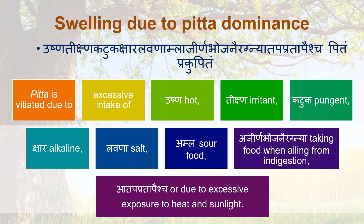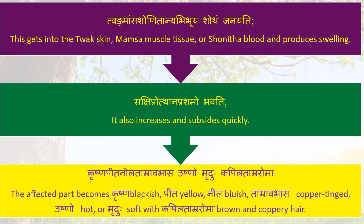Swelling due to Pitta dominance: Pitta is vitiated due to excessive intake of Ushna (hot), Tikshna (pungent), Katuka (pungent tasting), Kshara (alkaline), Lavana (salt), Amla (sour) foods, taking food while suffering from indigestion (Ajirna Bhojanaihi), and due to excessive exposure to heat and sunlight (Atapa). This vitiated Pitta gets into Tvak (skin), Mamsa (muscle tissue), Shonita (blood) and produces swelling. It increases and subsides quickly.